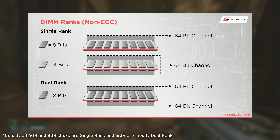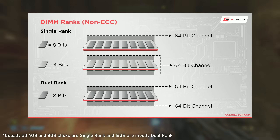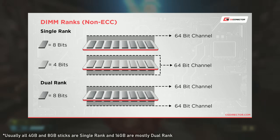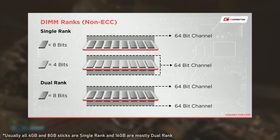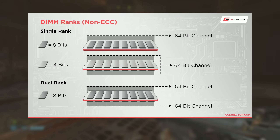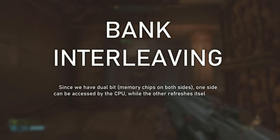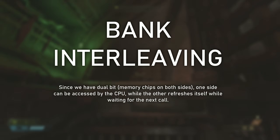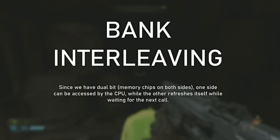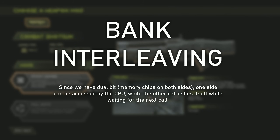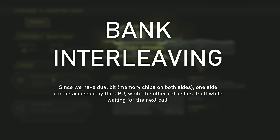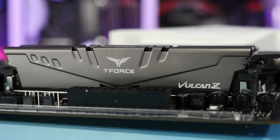Single rank is when a RAM stick has a 64-bit bus on one side only, while dual rank is when a RAM stick has a 64-bit bus on each side, leading to a total of 128 bits. The actual performance difference between single and dual rank is due to bank interleaving — since dual rank sticks have memory chips on both sides and double the bus width, the CPU can access one side while the other refreshes itself, reducing memory response times and usually helping in CPU-intensive applications.